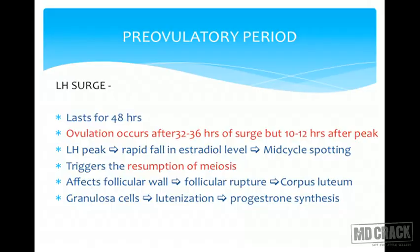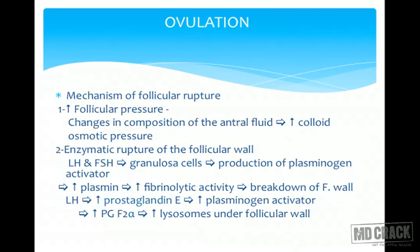LH affects the follicular wall; the follicle ruptures and corpus luteum forms as granulosa cells get luteinized, initiating progesterone synthesis. Regarding the mechanism of follicle rupture: there is increase in follicular pressure, changes in antral fluid composition, and increased colloid osmotic pressure. There is also enzymatic rupture of the follicular wall — LH and FSH act on granulosa cells, which secrete plasminogen activator, increasing plasmin, fibrinolytic activity, and breakdown of the follicular wall. The LH peak also releases prostaglandins and increased plasminogen activators, causing spasm of the micro-musculature, increased PGF2-alpha, increased lysosomes under the follicular wall, breaking it and releasing the follicle.